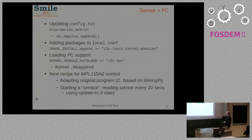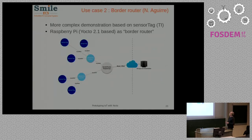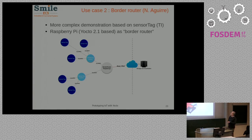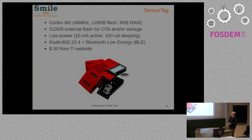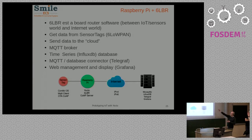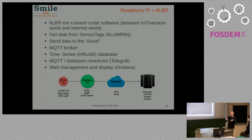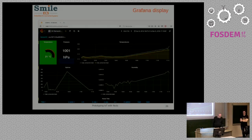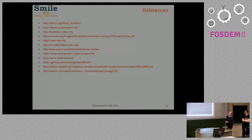The second use case is work done by Nicolas Aguirre in Toulouse — a more complex demonstration based on a real IoT device with 6LoWPAN. We use a Raspberry Pi as a border router running Yocto, based on a Texas Instruments sensor tag with a Cortex-M processor and low power — a real IoT device. We use 6LBR border router software to get data from the tags, send it to the cloud with MQTT, and use Grafana to visualize the values in a web browser.